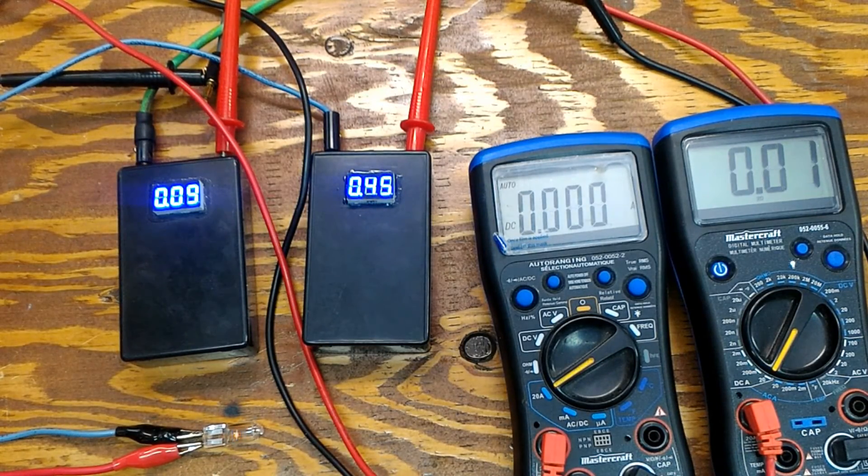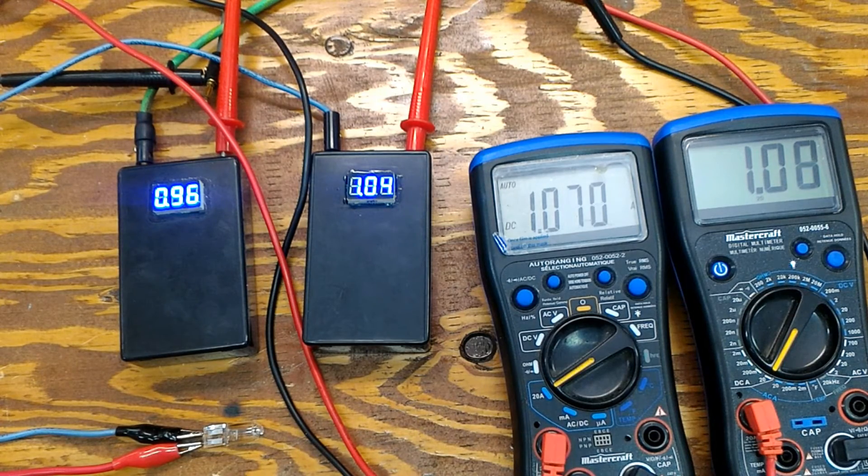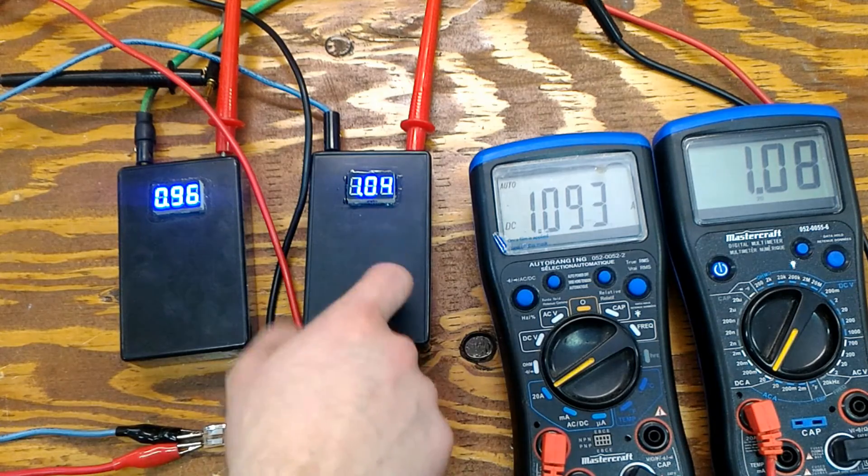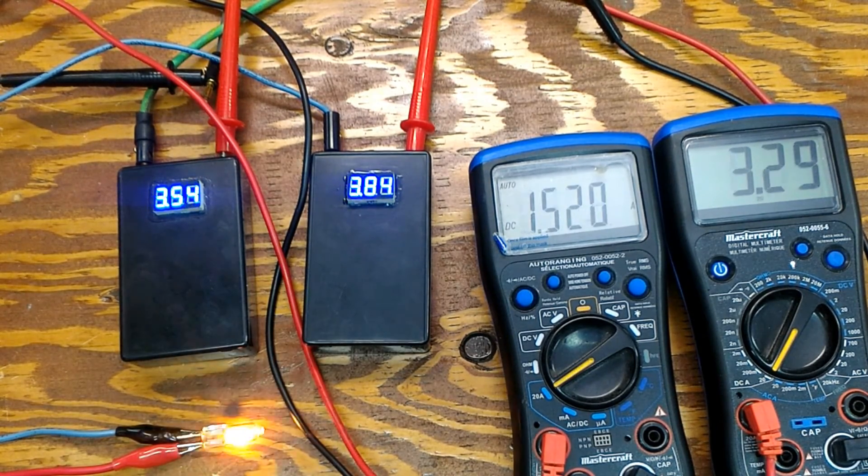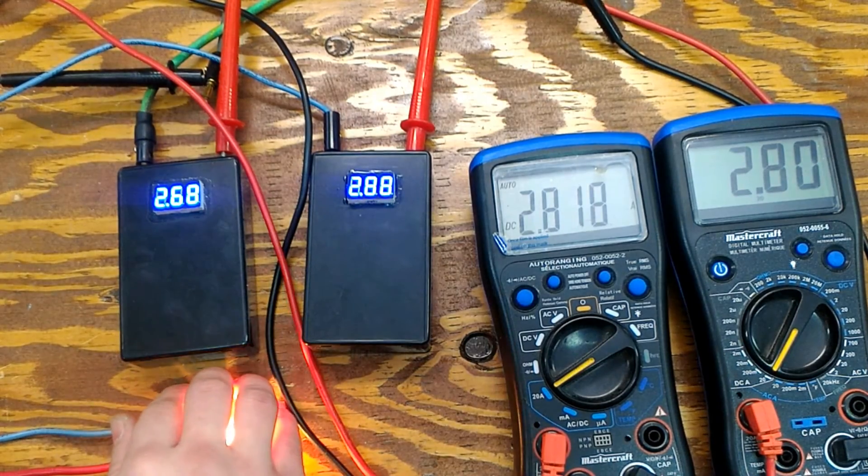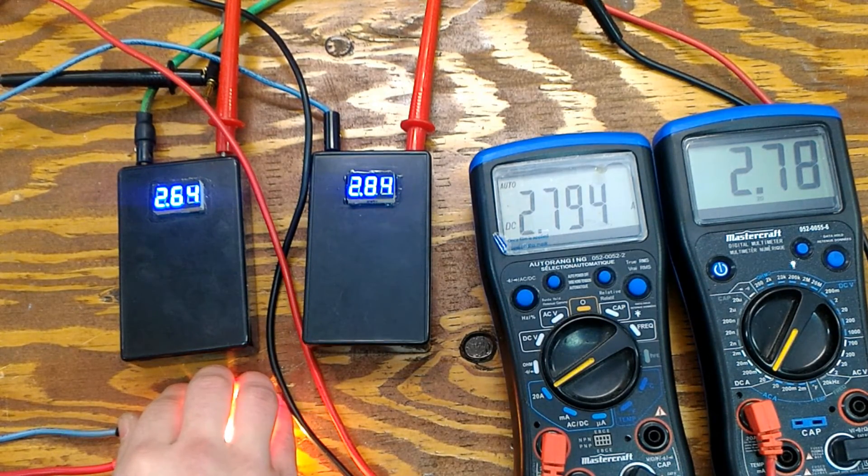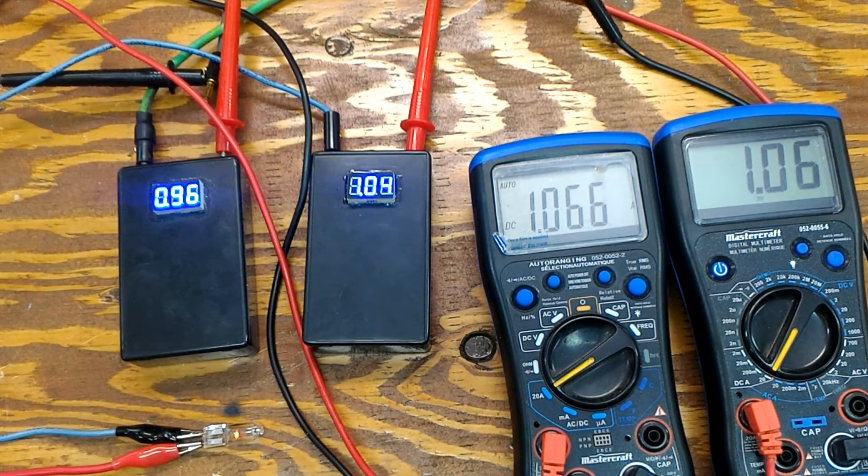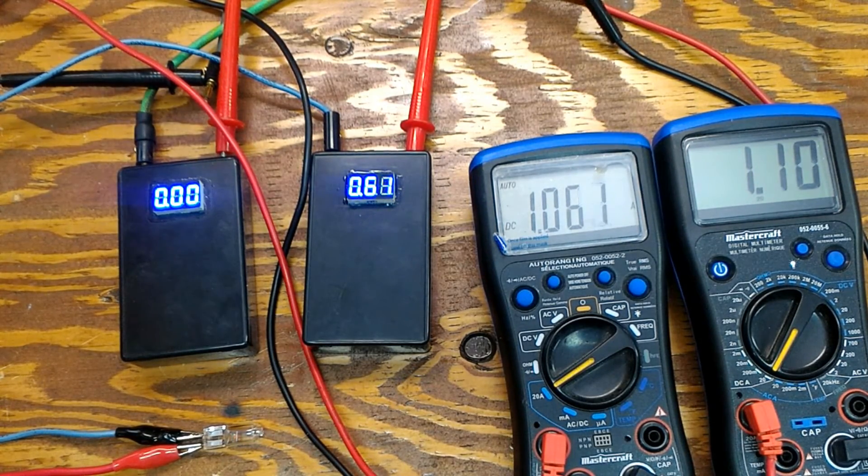So we're going to go to 3.3 volts here and as you can see again it's pretty accurate, it's accurate enough so we can actually depend on this meter when measuring the current. Going to 12 volts and I'm going to cover it and as you can see it's pretty accurate. Back to 3.3, back to five.